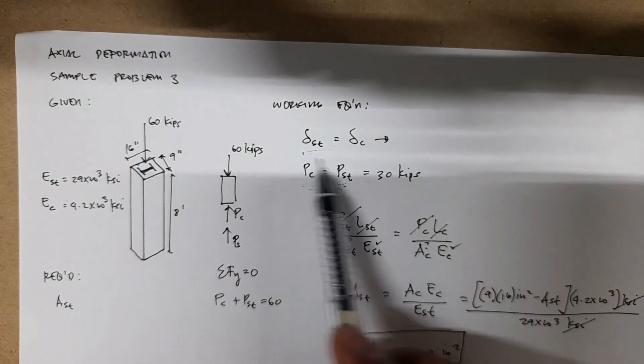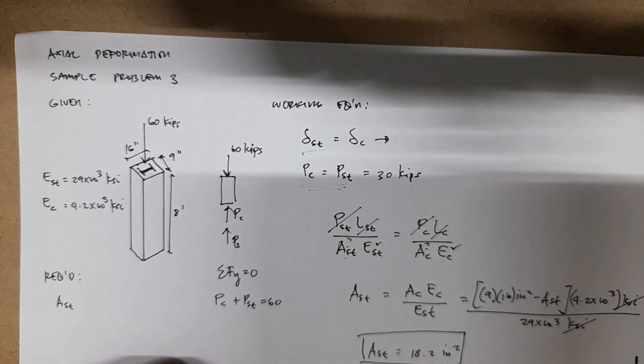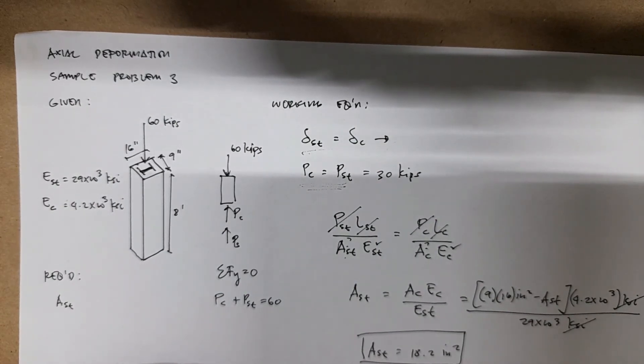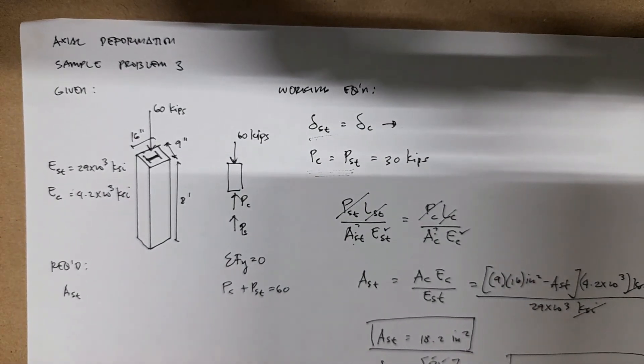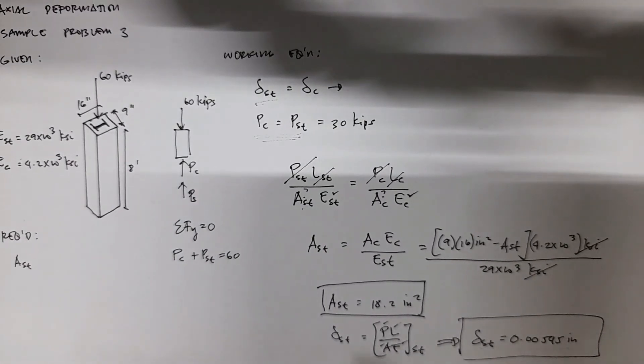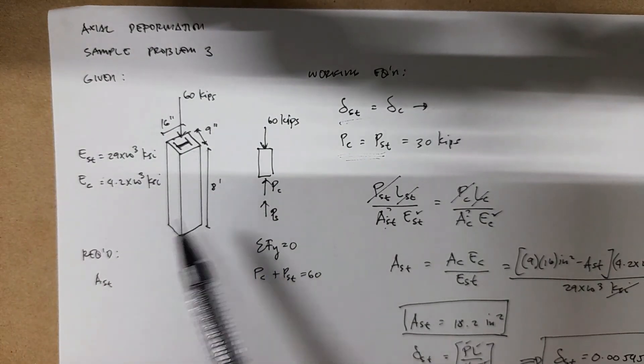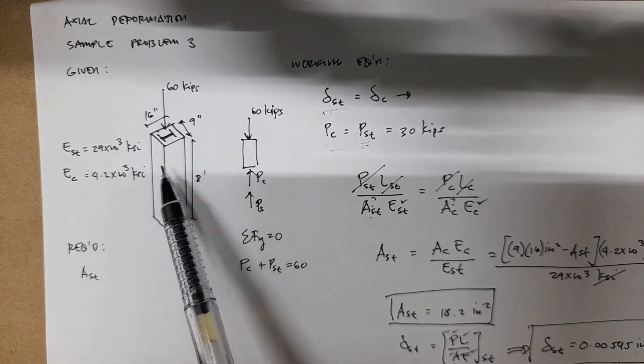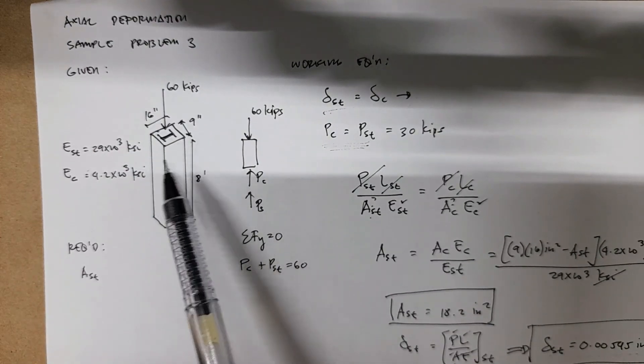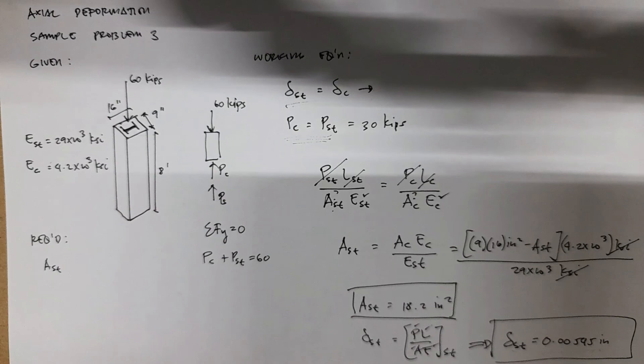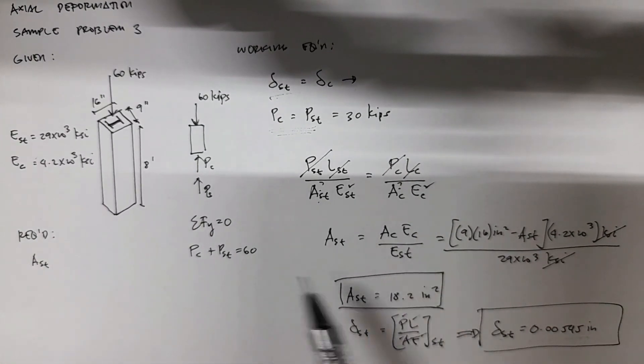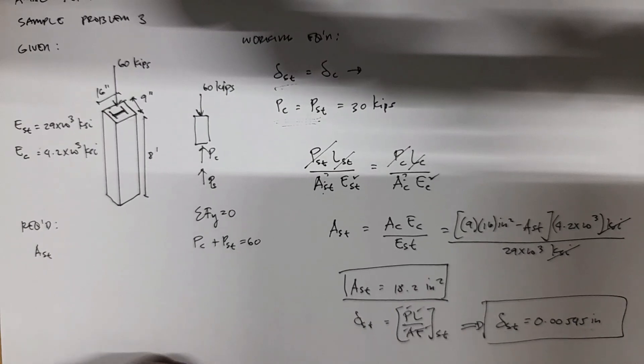This value is also the deformation of your concrete because of the first relationship that the deformation in steel is the same as the deformation of concrete. That's just how you approach these kinds of problems for composite materials - two different materials treated as one. This is usually the way you solve these types of problems.